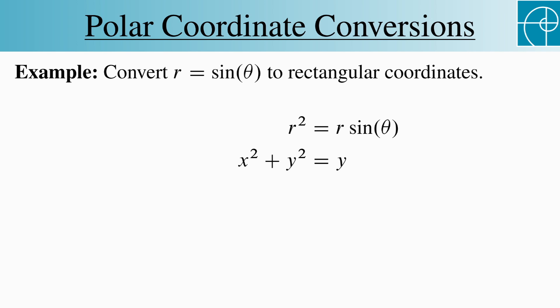In the next step, we'll not only move the y to the other side, but also add 1 fourth to each side. We do that to complete the square using y squared minus y, so we can write this in its final form like so.